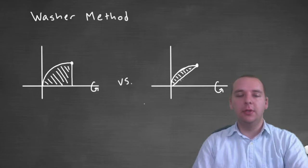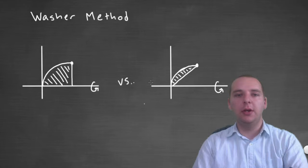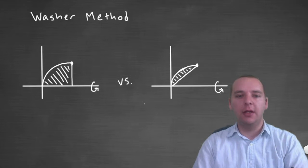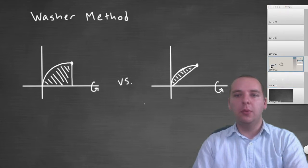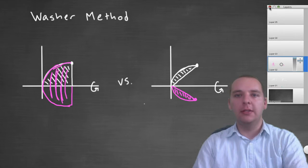Now, here's the issue that's going to happen, that's going to require us to look at something new called the washer method. Let's take a region like this, now we haven't seen one like this before. If we revolve this guy around the x-axis, something strange would happen. So let me show you here, we're going to compare these two guys, and I've already drawn what we get when we revolve both of these guys.